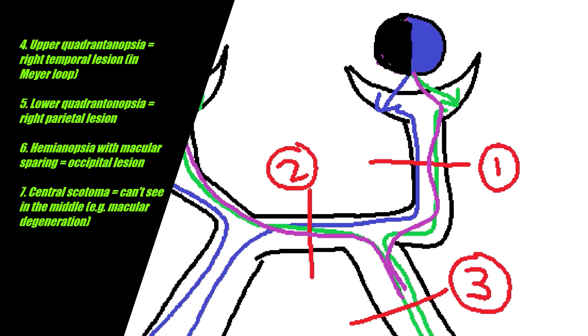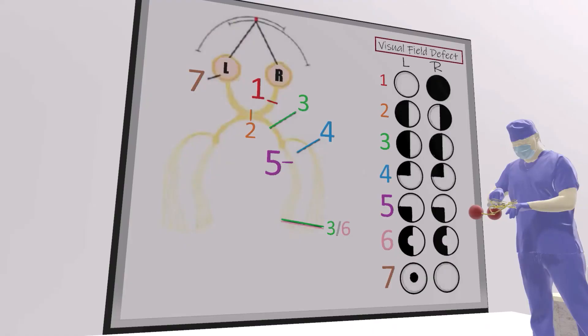We've discussed the three most high-yield lesions, but let's talk about four more. If the lesion is in the optic radiation by the Meyer loop going to the temporal lobe, it leads to a left upper quadrant anopia. If it's in the right parietal lobe, it leads to a left lower quadrant anopia — T is close to U so upper goes with temporal, and P is near L so lower goes with parietal. A right occipital lesion can lead to hemianopia with macular sparing, and macular degeneration can lead to central scotoma, where the patient cannot see in the middle of their visual field, as in glaucoma.